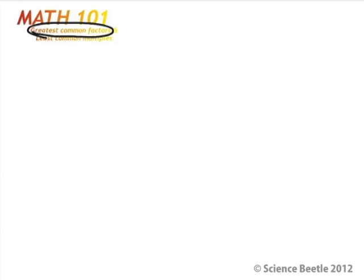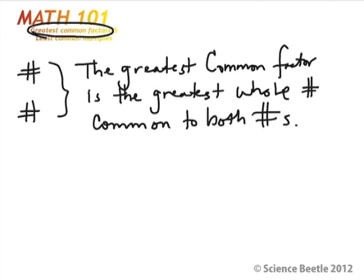Greatest common factors, essentially when you have two numbers and you're trying to figure out which numbers they have in common. So the greatest common factor is the greatest whole number common to both numbers.